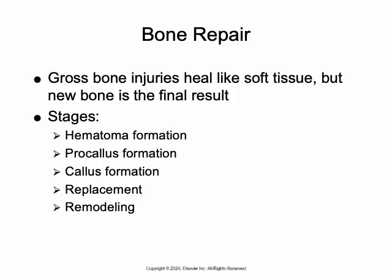This remodeling process can repair microscopic bone injuries, but when there are gross injuries like a fracture or a surgical wound, it will heal by the same stages as soft tissue injuries, except that new bone — instead of scar tissue — is going to be the final result.